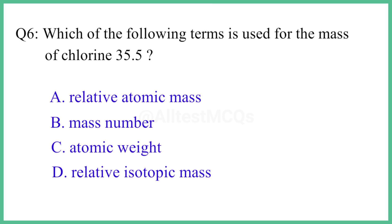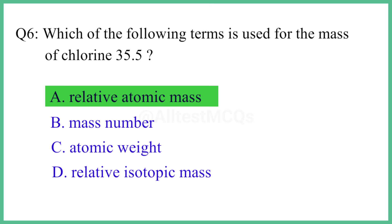Question number 6. Which of the following terms is used for the mass of chlorine 35.5? The right answer is option A: relative atomic mass.